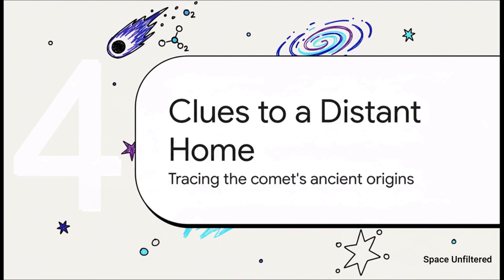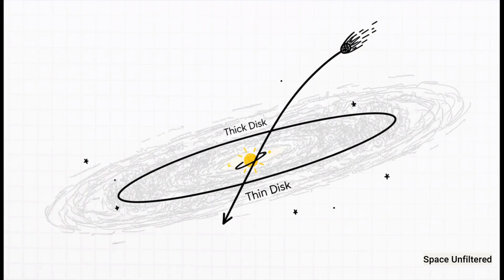Now we have a unique trajectory and a unique chemical makeup. By combining these two sets of data, scientists can begin to piece together the history of this cosmic traveler. When its velocity is analyzed in the context of our galaxy, its path doesn't align with the thin disk of the Milky Way where our sun and most nearby stars reside.